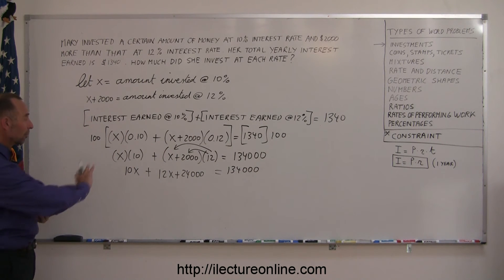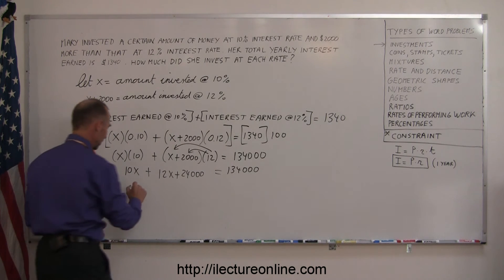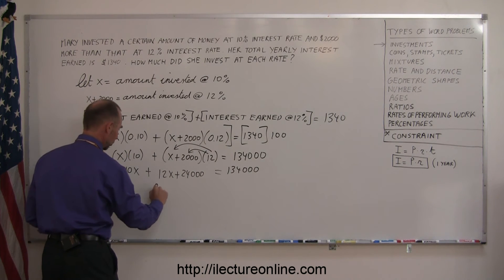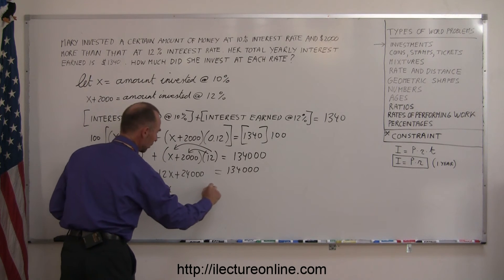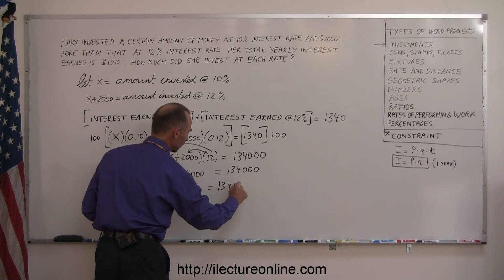The next step is to move all the numbers to the right side and all the x's to the left side. The x's are already here, so they stay. 10x plus 12x is 22x equals